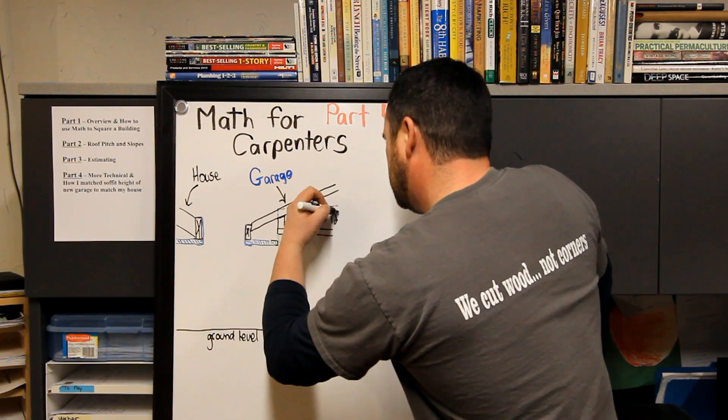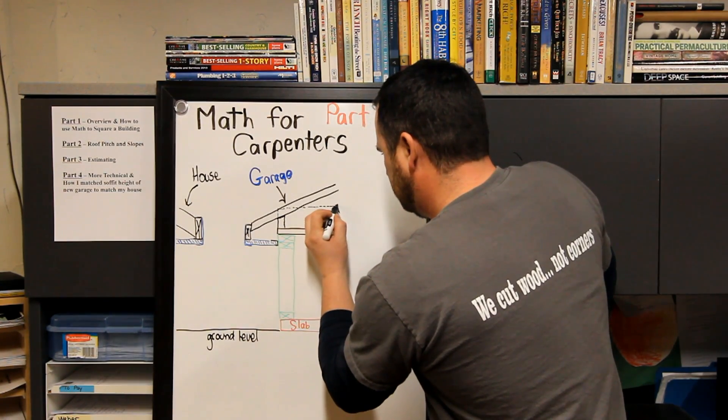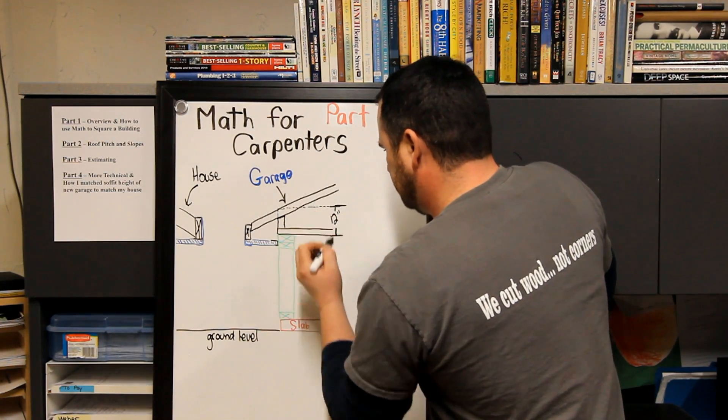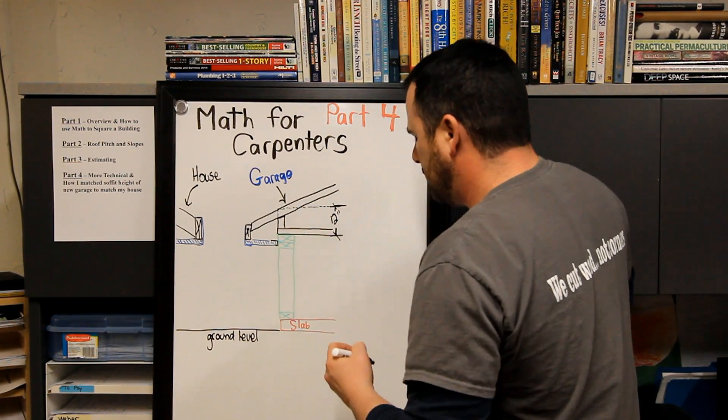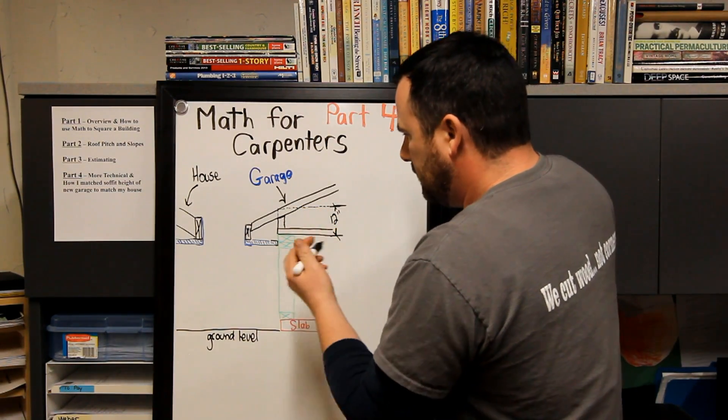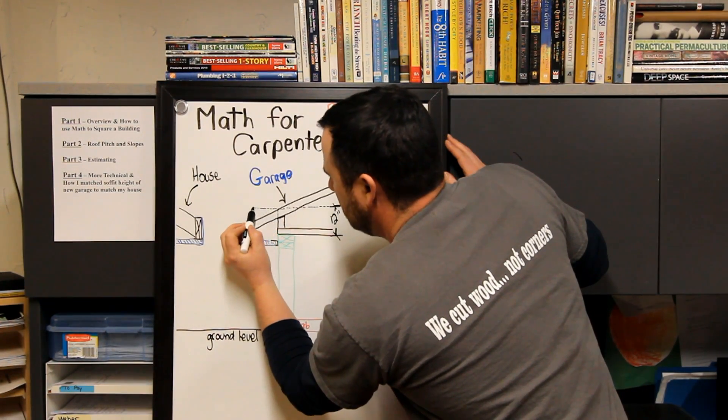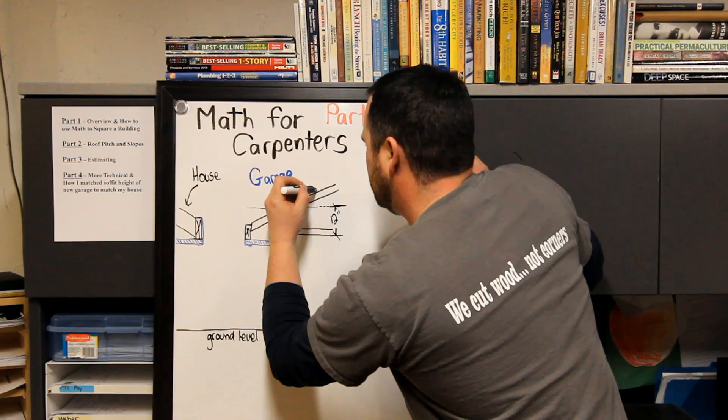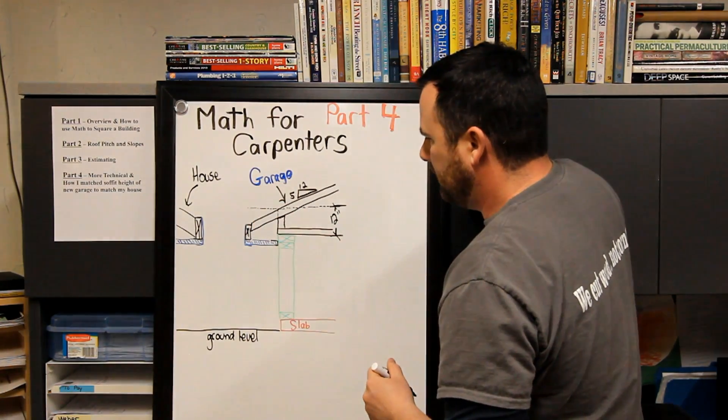And I hope I'm making it clear, guys. My heel height is 12 inches, so from here to here, 12 inches.